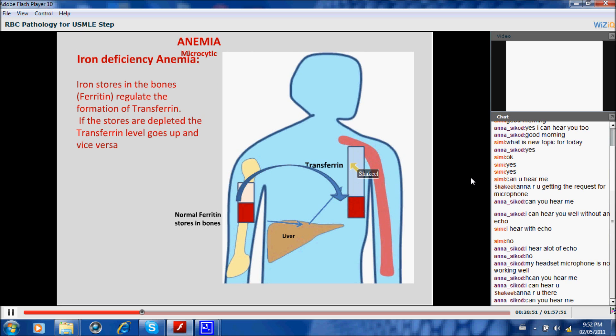Transferrin is the transfer form. Transferrin is the transfer form which carries the iron in the blood. Ferritin is the storage form. So when your stores are full, the body thinks that my stores are full. Why would I make more transferrin? So it doesn't make more transferrin.